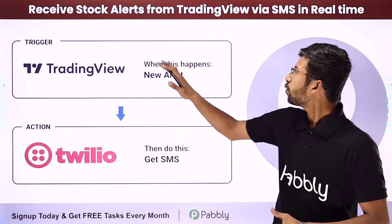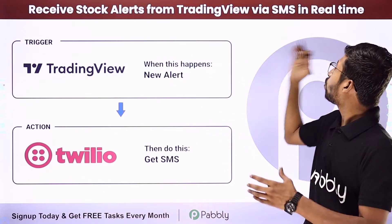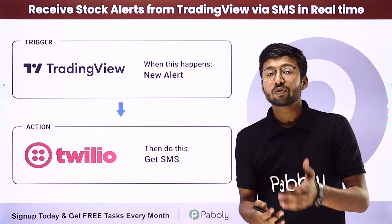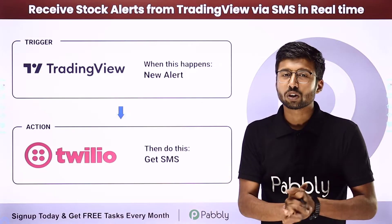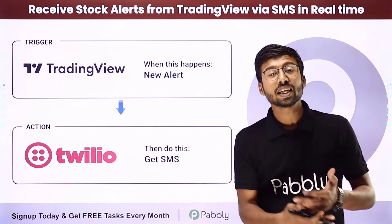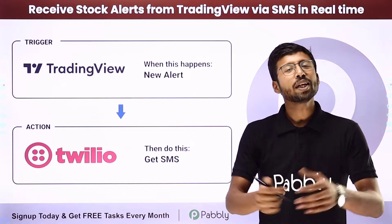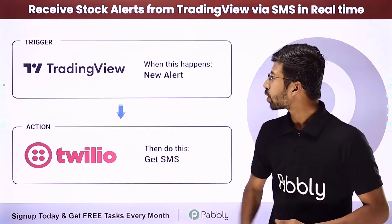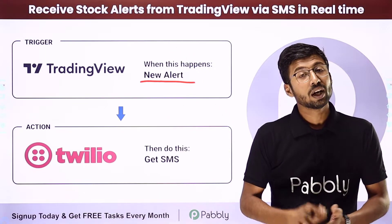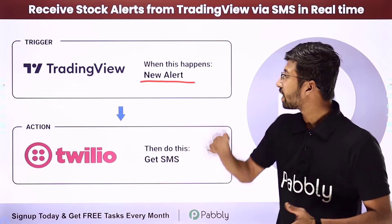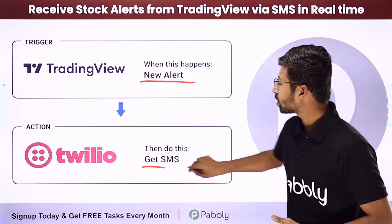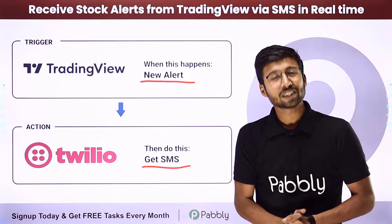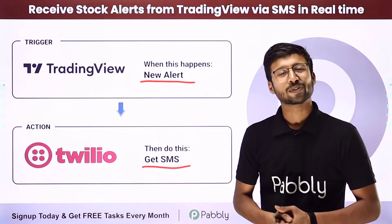In this video, we will learn how to receive stock alerts from TradingView via SMS in real time. Suppose you have created some alerts in TradingView for your favorite stocks and indexes, and you want to get those alert details as an SMS on your mobile number. You can completely automate this process. The trigger will be getting an alert in TradingView, and the action will be getting those alert details as an SMS using Twilio.